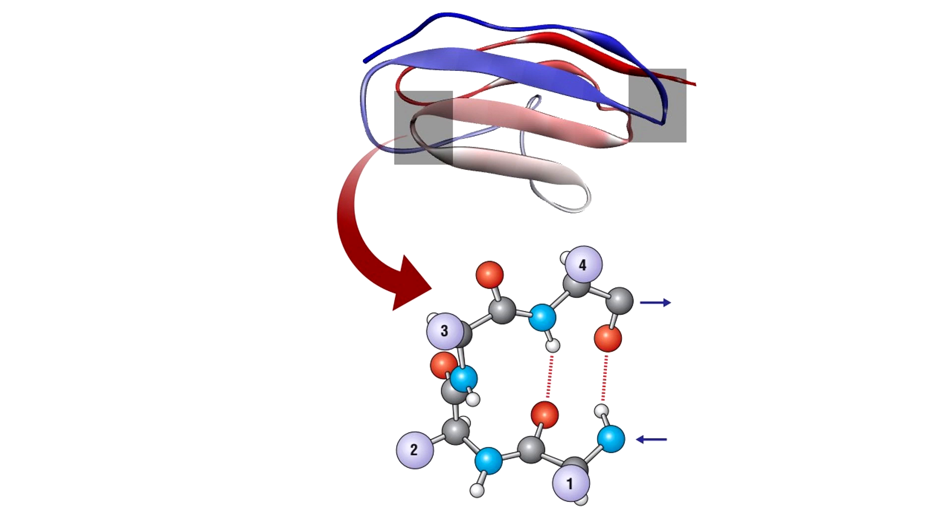An interesting fact about beta turns is that most of the main chain carboxy and amino group hydrogen bond donor and acceptor sites are not making hydrogen bonds with other backbone atoms. Rather such turns are generally found on protein surfaces where water molecules occupy these unsatisfied hydrogen bonding sites.